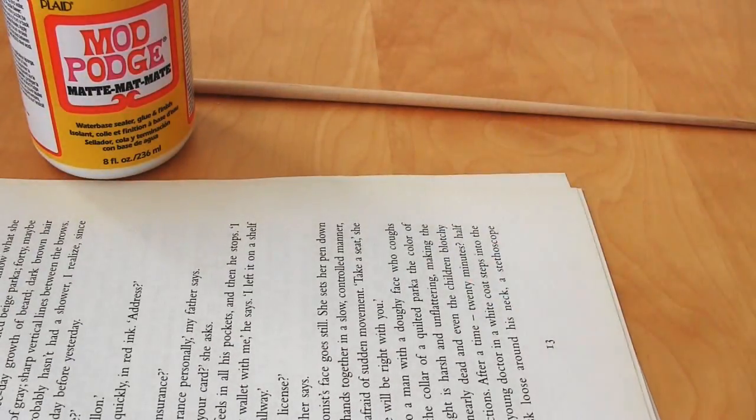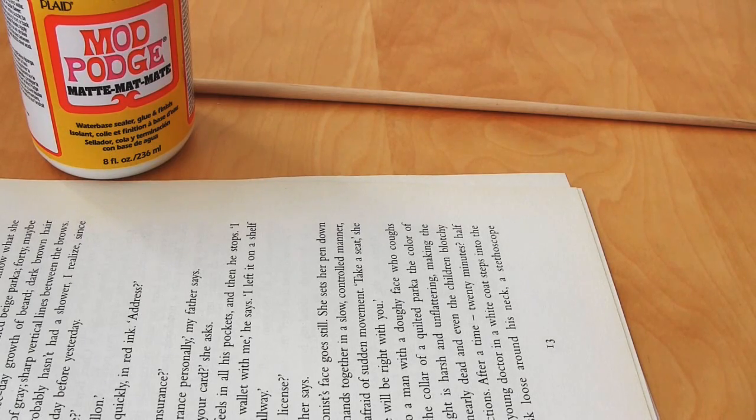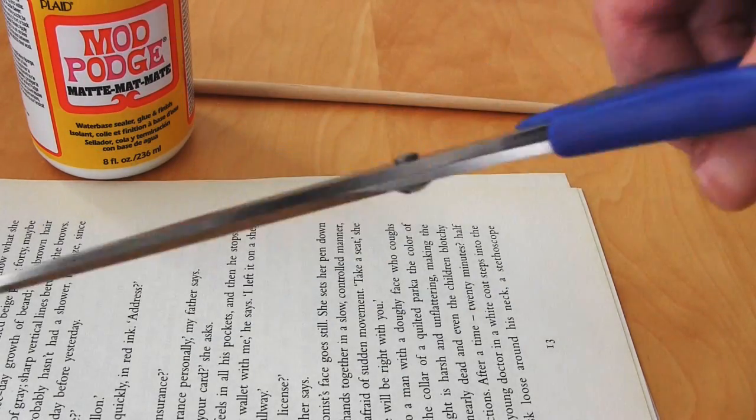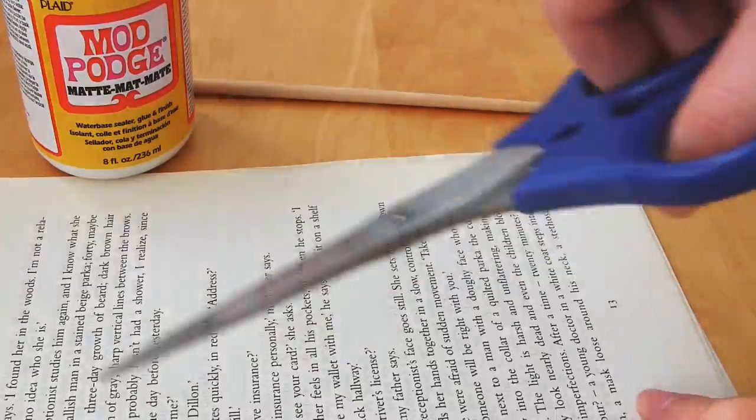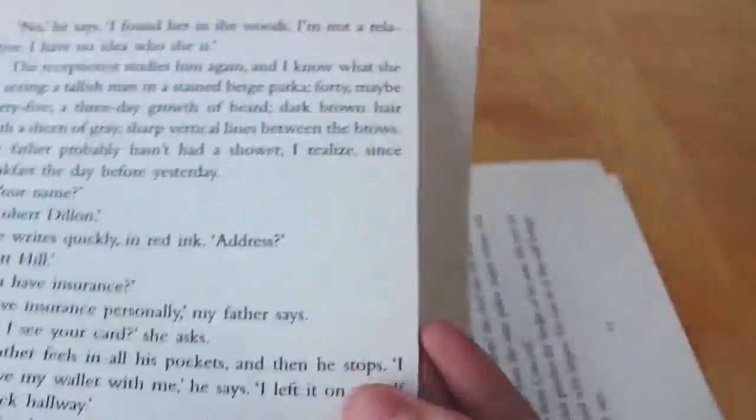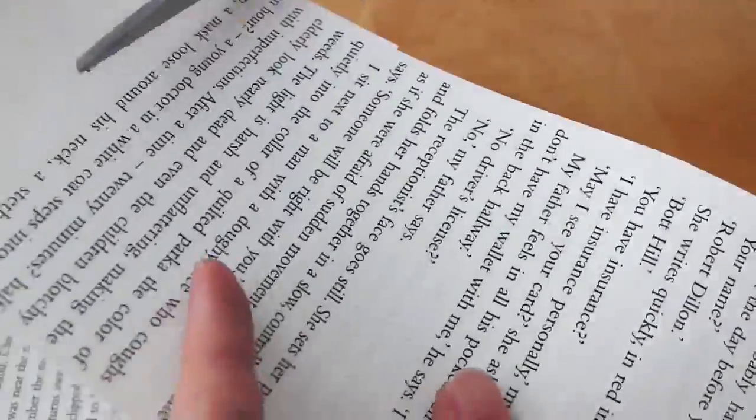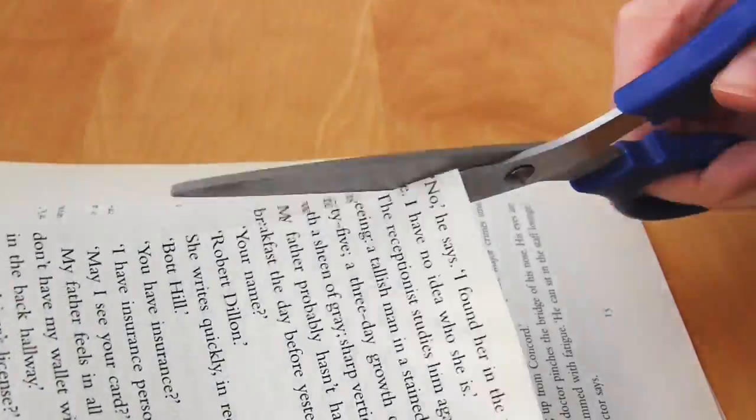So in a plastic container, I mixed two parts of PVA glue to one part water. And I mixed this up using my paint brush. You don't want to use a good paint brush for this, just use a cheap old one. Then I cut up a handful of book pages into thin strips.